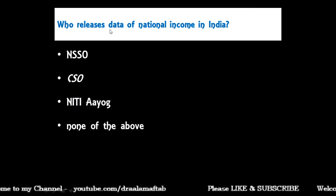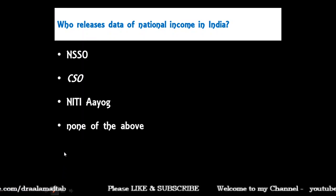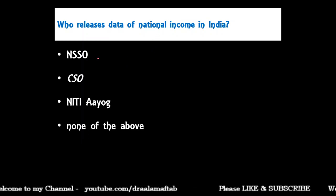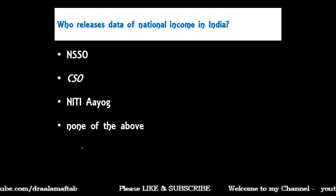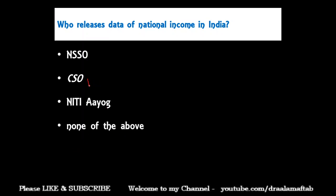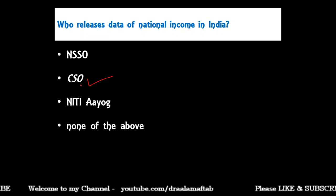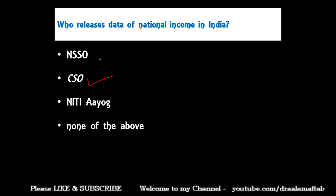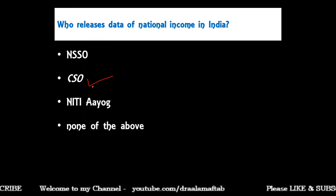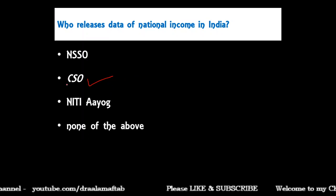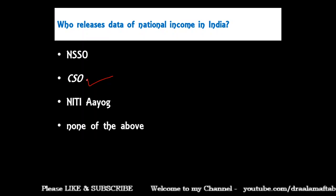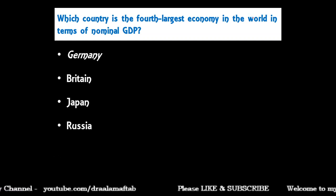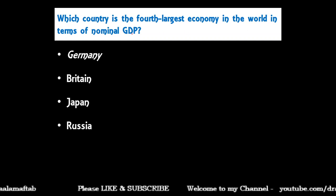Next question: Who releases data on national income in India? Options are: NSSO, CSO, NITI Aayog, or none of the above. The correct answer is CSO, that is the Central Statistical Organization. NSSO — the National Sample Survey Organization — conducts surveys across the country, but CSO under the Ministry of Statistics calculates national income data.